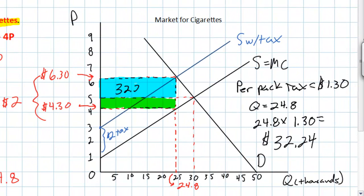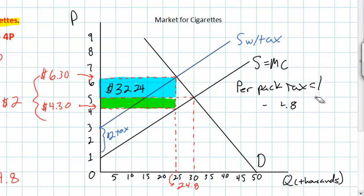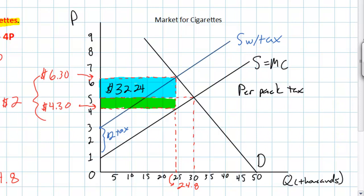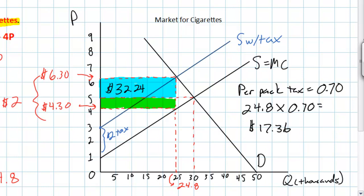We can do similar analysis to find how much of the total tax will be paid by producers. The per-pack producer tax burden is $2.00 minus the $1.30 consumer portion, which equals $0.70 or 70 cents. Multiplying 24.8 thousand packs by $0.70 gives a total producer tax burden of $17.36 thousand, represented by the green rectangle.